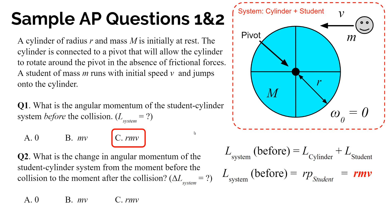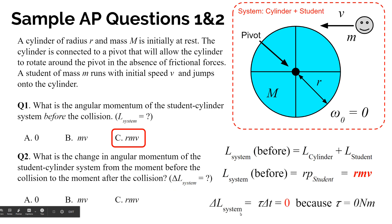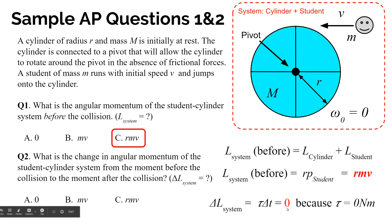The next question: what is the change in angular momentum of the student-cylinder system from just before to just after the collision? What causes a system to change its angular momentum? The equation is: change in angular momentum equals torque times time. Since the problem states there are no frictional forces, there are no outside torques during the collision. The torques the student and cylinder apply to each other are internal to the system. Therefore, the change in angular momentum of the system is zero — angular momentum is conserved. The answer is A.